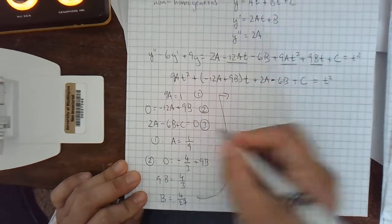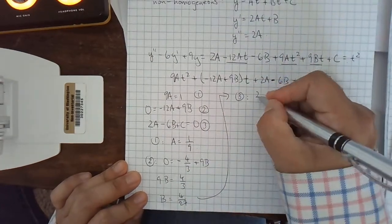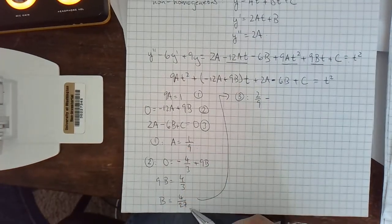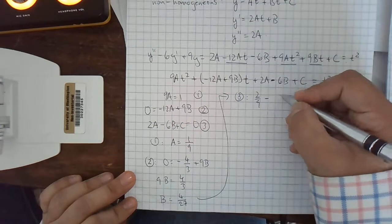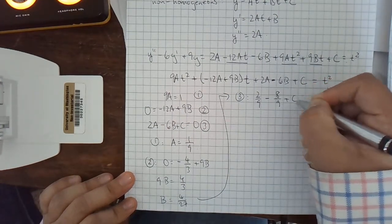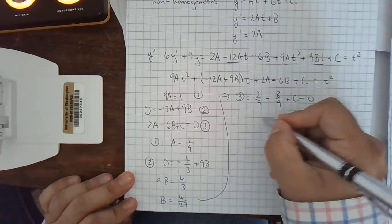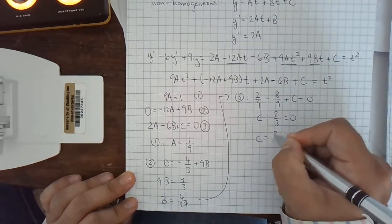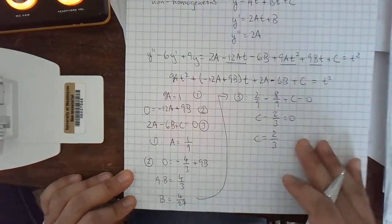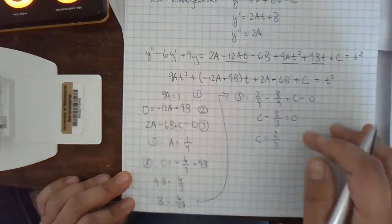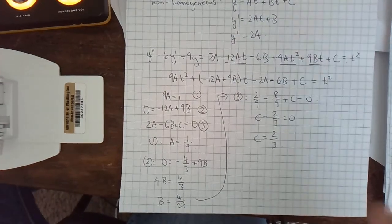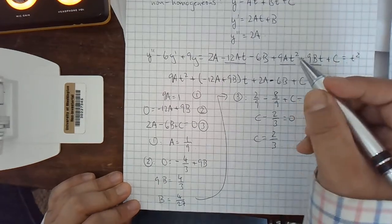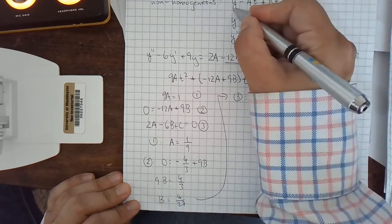And then I'm going to look at equation 3 to get c. So 2 ninths minus 6 times 4 27ths. So the 3 will cancel out with one of the 3s and the 27ths. I'm going to get 8 ninths actually plus c equals 0. Okay, so that means c minus 6 ninths or minus 2 thirds equals 0. c is 2 thirds. I'm trying to do a little bit of arithmetic calculations in one step so that I have less writing. Okay, so my solution then, go back to here.